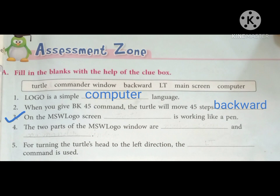Number three: On the MSW Logo screen, dash is working like a pen. So as we know that on the MSW Logo program, the turtle is the main object without which we cannot do anything, so we will write 'turtle' on the blank. Number four: The two parts of the MSW Logo window are dash and dash.